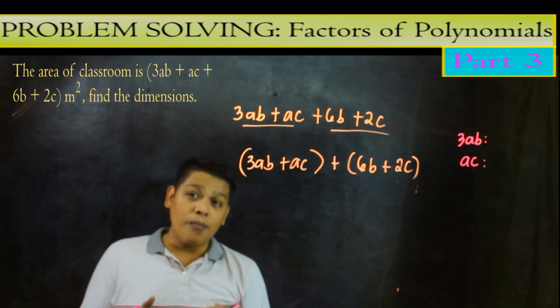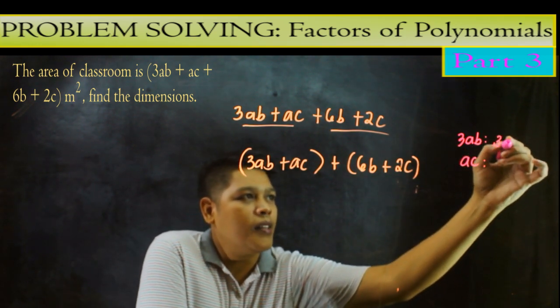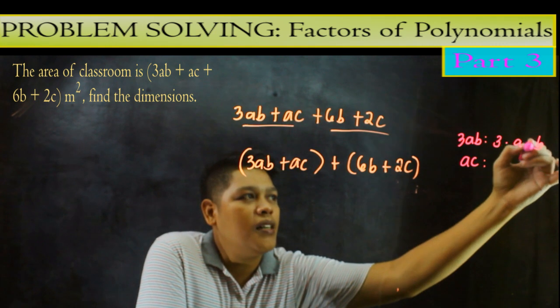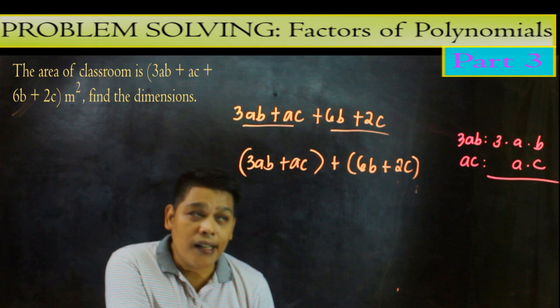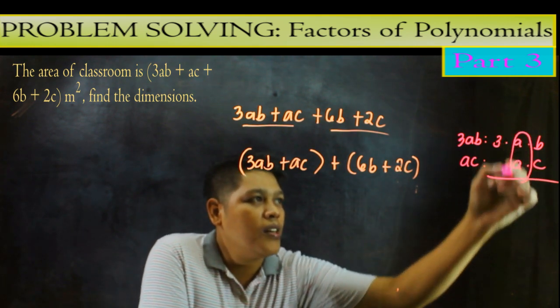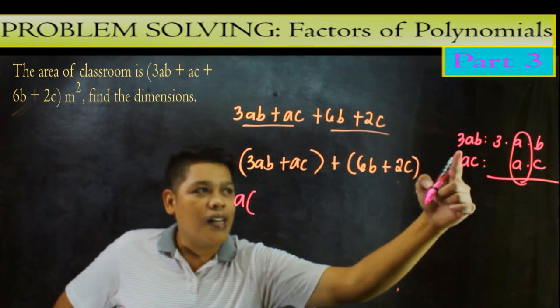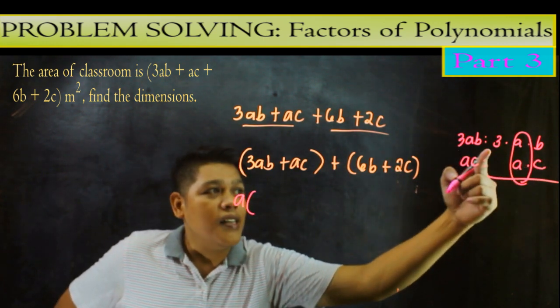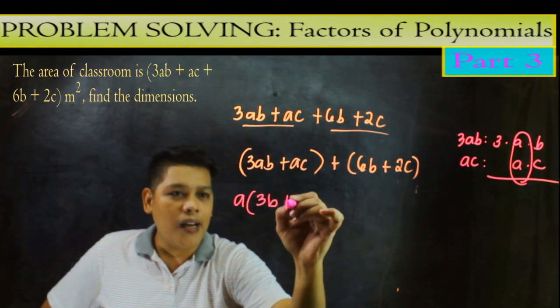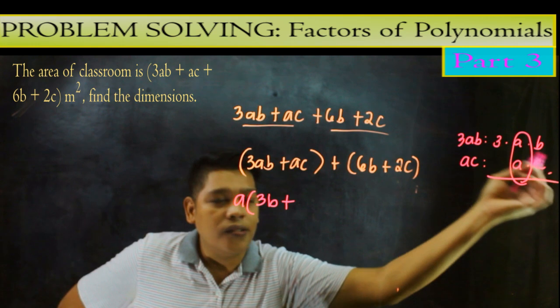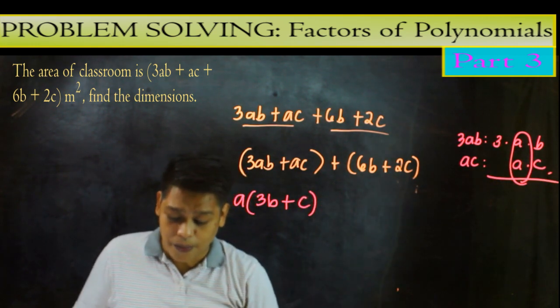Using the common monomer factor. So pwede natin itong isulat as 3 times a times b ito naman a times c. So alin dito yung parehas sa kanya? Eh yun yung a. So ang gagawin natin dito a ang ating susulat dito. Yung sa taas, ano yung natira sa taas? 3 tsaka b. So ilalagyan natin dito 3b kukopiayin natin ito plus ano yung natira dito? Which is c. So c, yan yung ating factor dyan. Using common monomer factor.